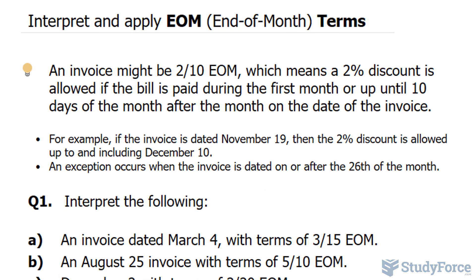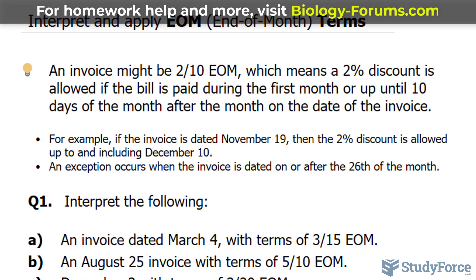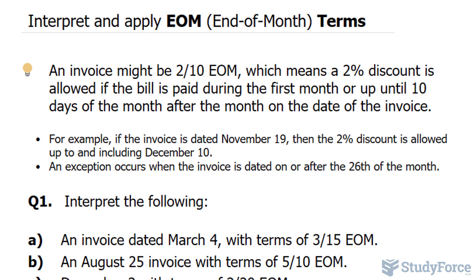An invoice might be 2-10 EOM, which means a 2% discount is allowed if the bill is paid during the first month, or up until 10 days of the month after the month on the date of the invoice. For example, if the invoice is dated November 19, then the 2% discount is allowed up to and including December 10. However, an exception occurs when the invoice is dated on or after the 26th of the month.